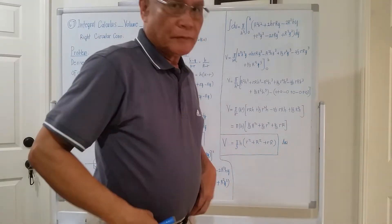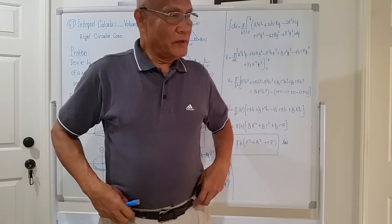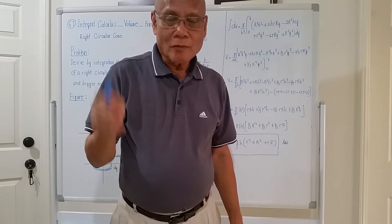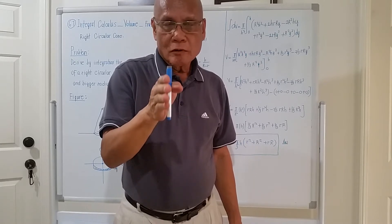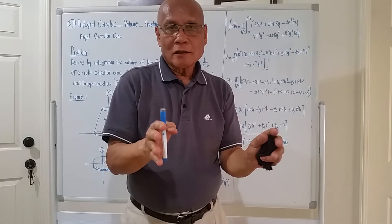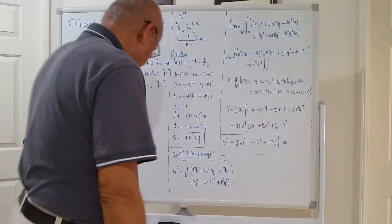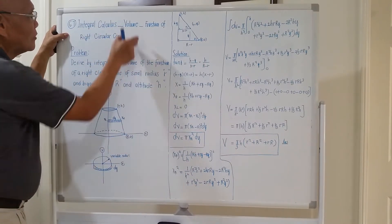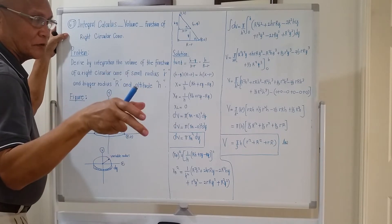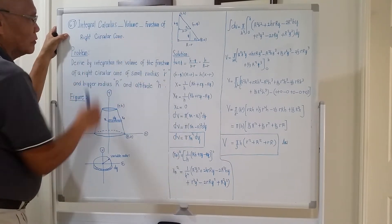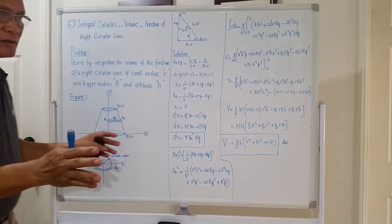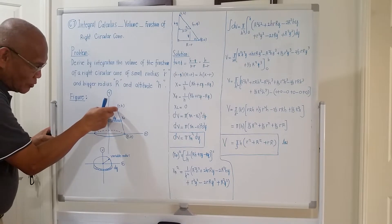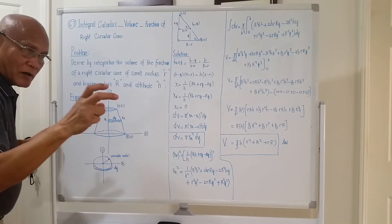Good afternoon. My topic this afternoon will be still integral calculus, but I will derive the formula for taking the volume of a frustum of a right circular cone. So let us start. Lesson 67, integral calculus — volume. The main topic this afternoon: frustum of a right circular cone. This is a frustum. The shape of a lampshade is a frustum. It has an upper dimension radius r and a lower, bigger radius R.